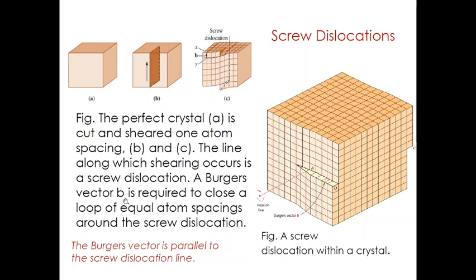A Burgers vector is required to close a loop of equal atom spacing around the screw dislocation. This Burgers vector defines the magnitude and direction of the dislocation line, and in the case of a screw dislocation the Burgers vector is parallel to the screw dislocation line.